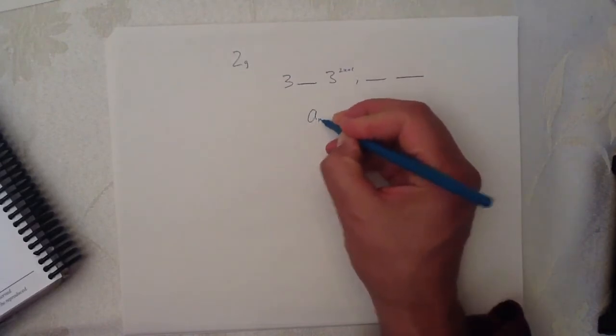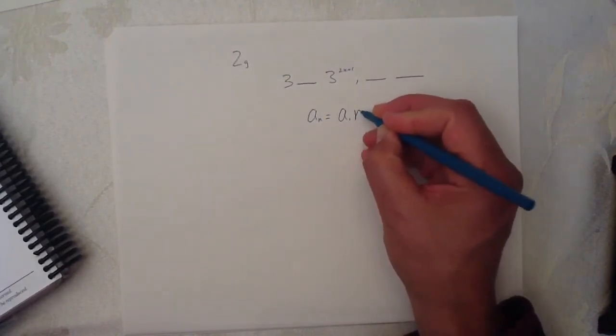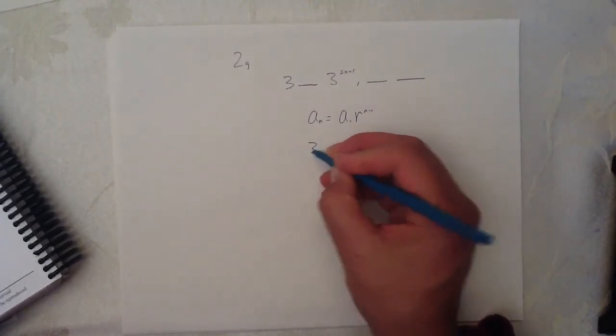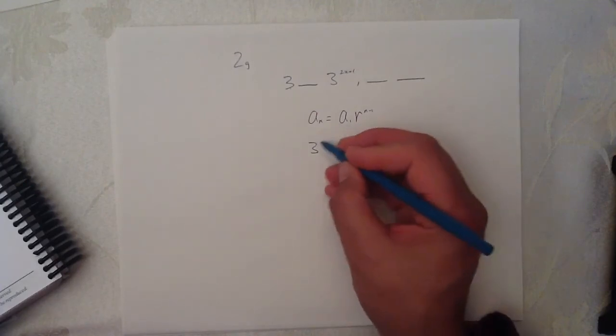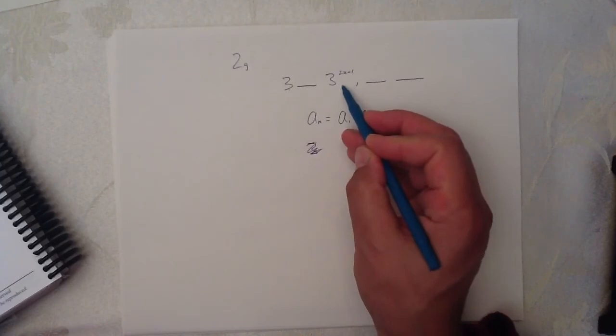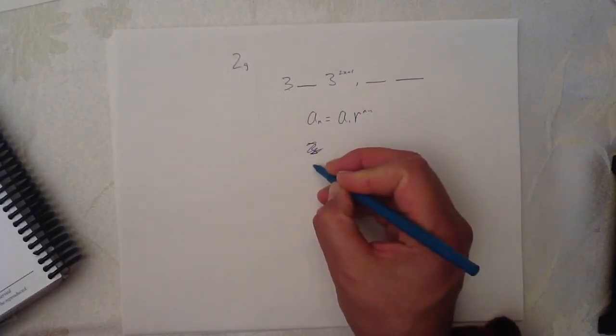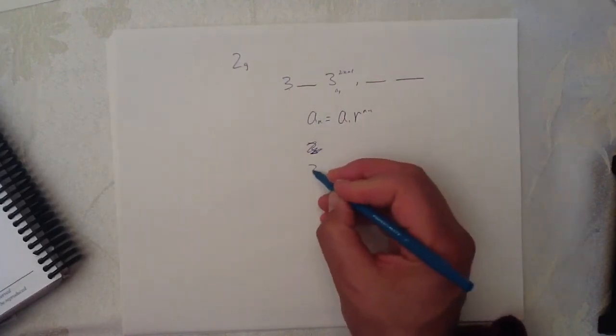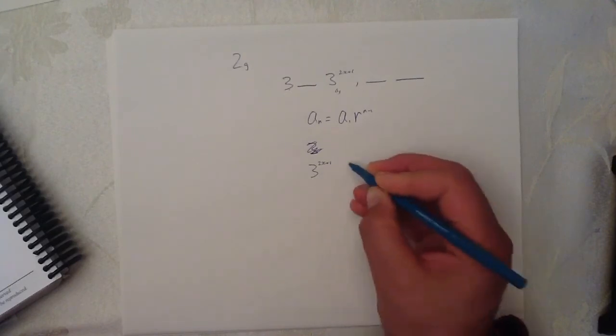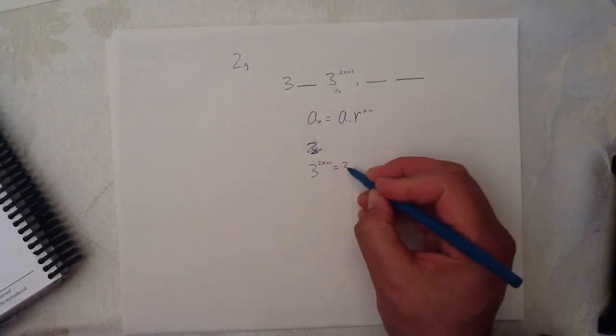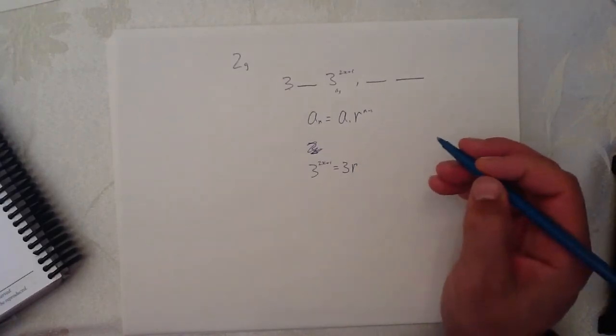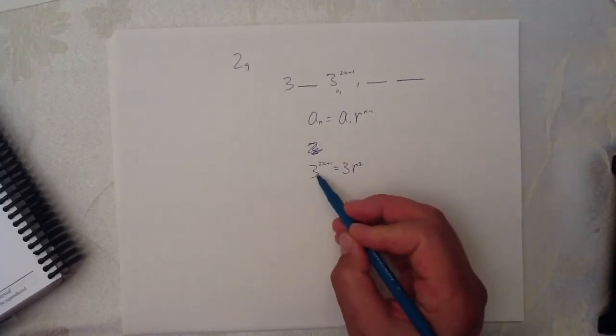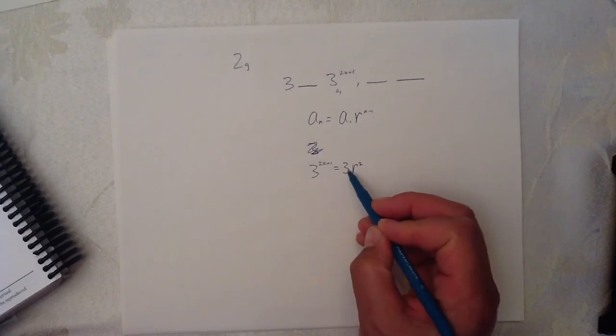What do we know? We know that A of N equals A1 times R to the N minus 1. So, the first A, thank you very much for giving us the first A, is 3. This one here, the second one, is that the second one? No, it's the third one. This is A3. So, A3 is 3 to the 2X plus 1. A3 equals A1, which is 3, times R to the N minus 1, and that's A3, so that's R squared.